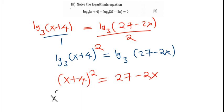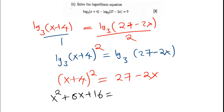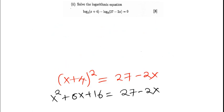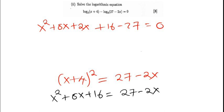This simplifies to a quadratic. Expanding (x plus four) squared gives x squared plus eight x plus sixteen, and this equals twenty-seven minus two x. Collecting like terms: x squared, plus eight x plus two x, plus sixteen minus twenty-seven, equals zero. So we have x squared plus ten x minus eleven equals zero.